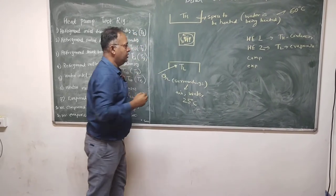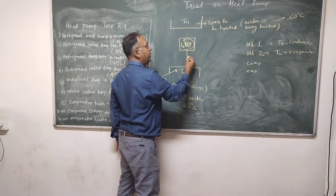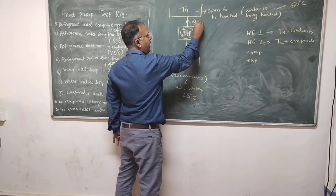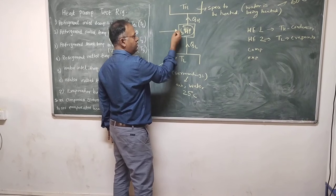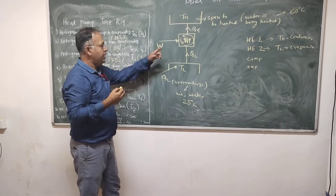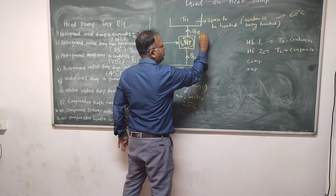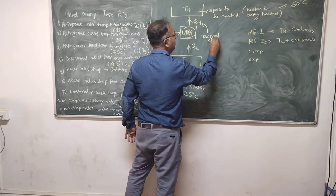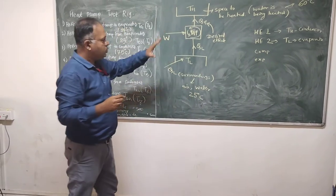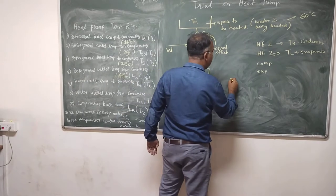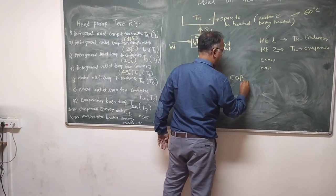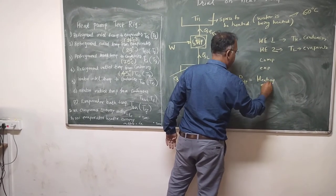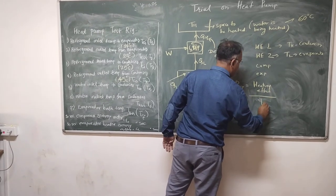In this system flows the refrigerant. What this system does is pump the heat from a lower temperature to a higher temperature. This is QL and this is QH, and this is possible by supplying electricity to the compressor. As a result, this heat is removed and you get a heating effect — this is the desired effect. You are interested in heating the water.